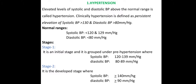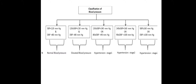Stage 1 is the initial stage, where systolic blood pressure is 120 to 139 mmHg and diastolic blood pressure is 80 to 89 mmHg. Stage 2 is the development stage, where systolic and diastolic reaches 90 mmHg and above.